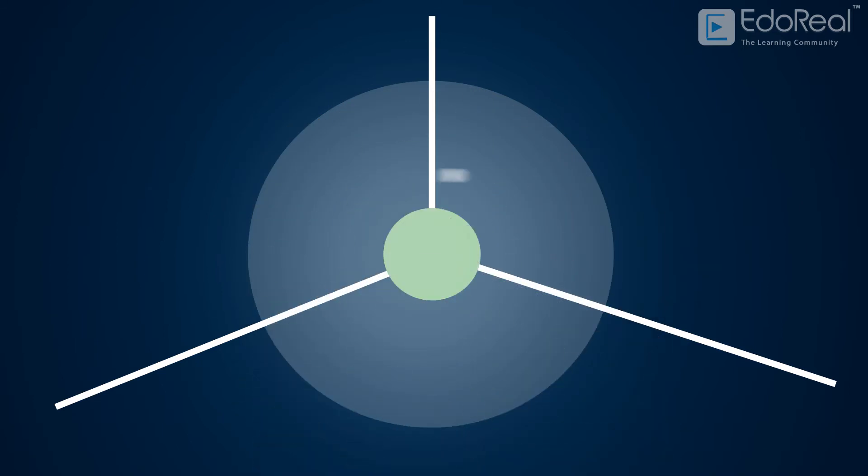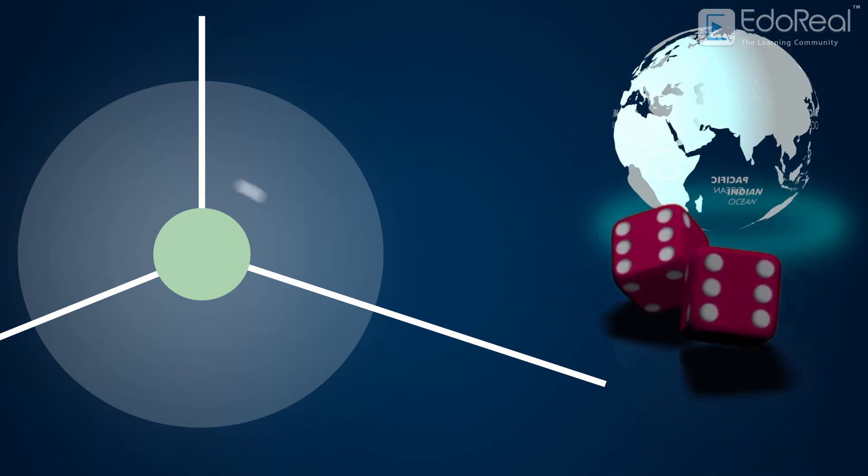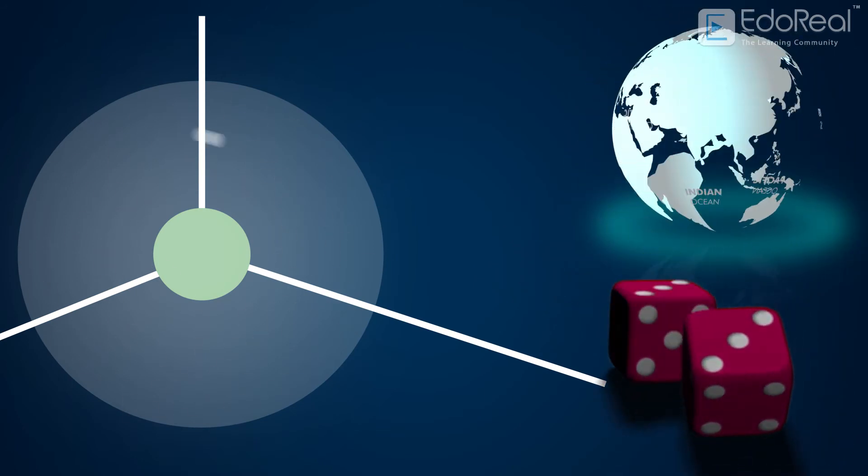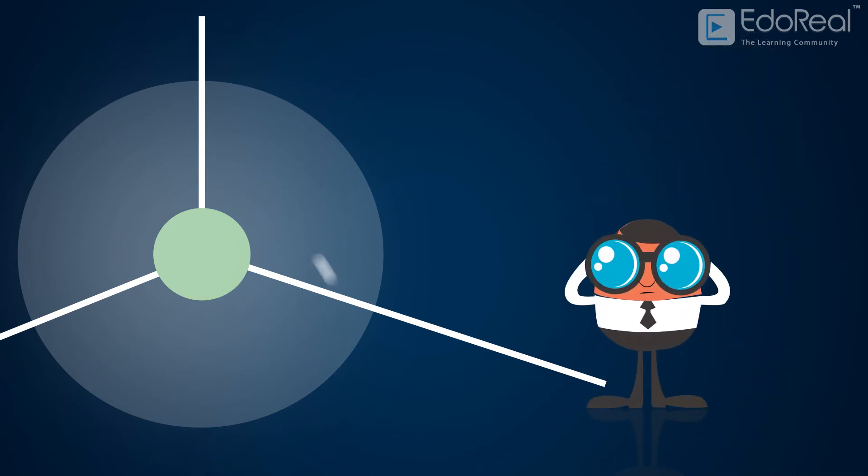But we can predict where an electron can be with the help of probability. How on earth do the particles that govern the world work on probability? Let's see how exactly electrons can be found with probability.